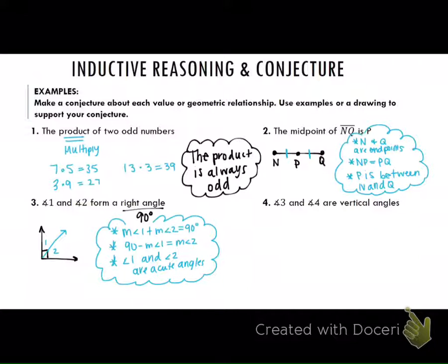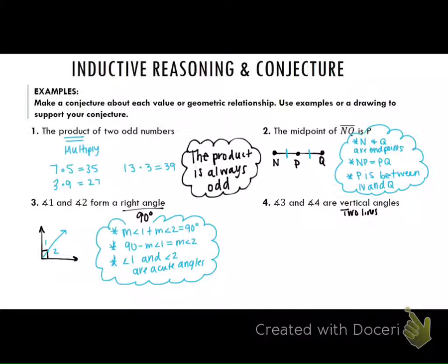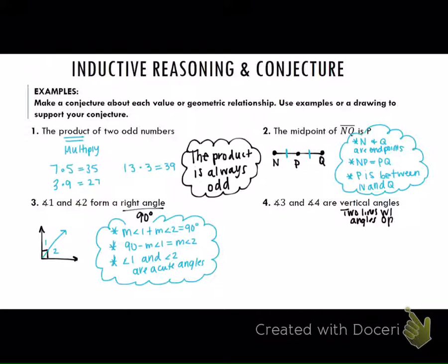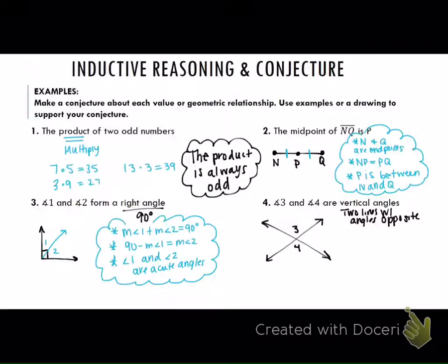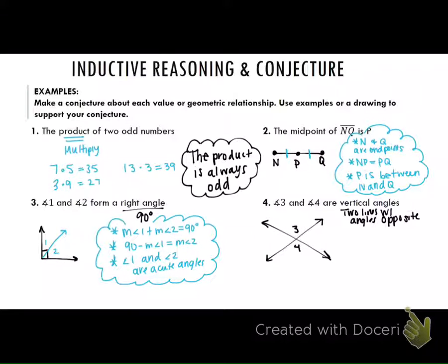What does it mean to be a vertical angle? They're opposite. How does a vertical angle form — what do you need? You need an X, so two lines with angles opposite each other. Give me a conjecture, Kylie. Angle three and four are equal — the measure of angle three and the measure of angle four are equal to each other because they are vertical angles.